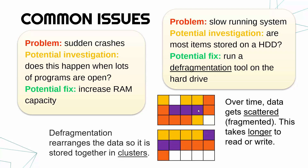What you can do is run a defragmentation tool, which rearranges the data so it is stored together in clusters — all the data stored together or at least much closer together. This speeds up the disk, speeds up your reading and writing because you haven't got to go to multiple locations. It's worth noting this fragmentation issue doesn't really happen with SSDs — it only really applies to magnetic hard drives.